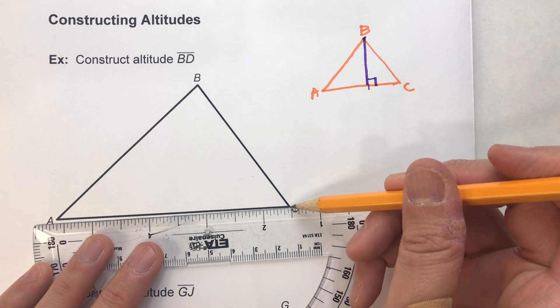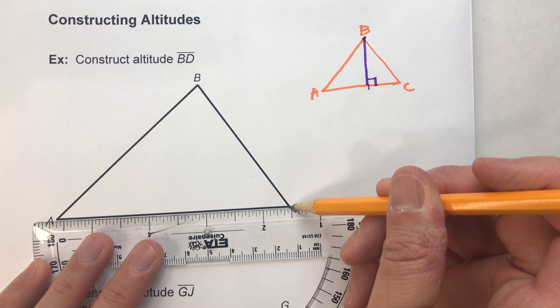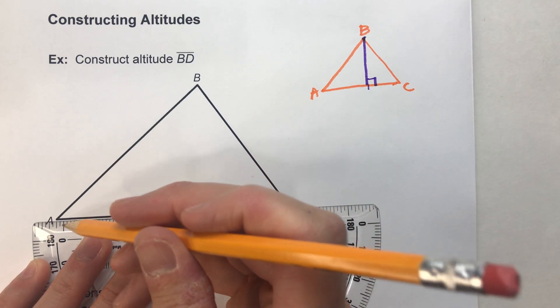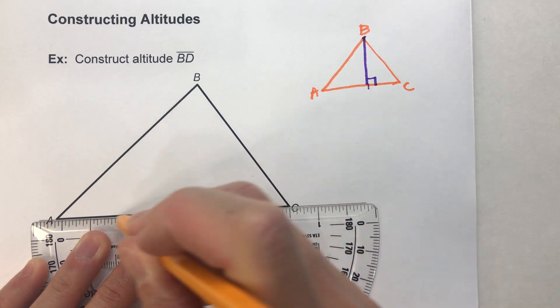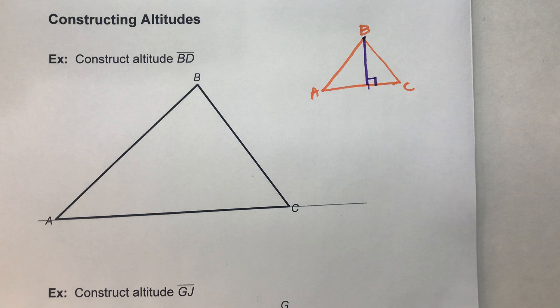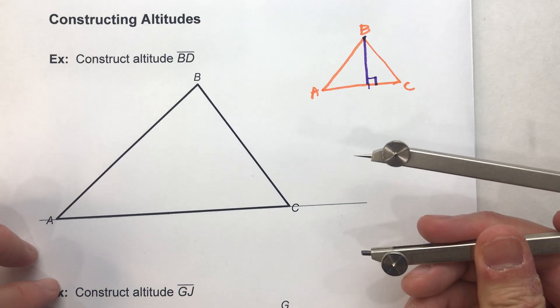Now to do that, first thing I'm going to do is extend this line segment AC a little bit in both directions because we're going to need some length on this thing. So I'm just going to make it a little bit longer here just in case we need it.